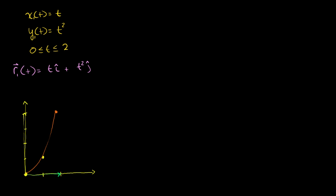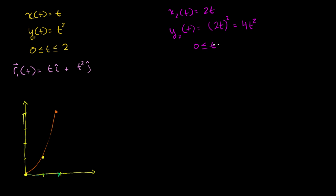Now I'm going to do this exact same curve but slightly differently. So x2 of t equals 2t, and y2 of t equals 2t squared, which is the same as 4t squared. And instead of going from t equals 0 to 2, we're going to go from t equals 0 to 1. So r2 of t equals 2t times i plus 4t squared times j.